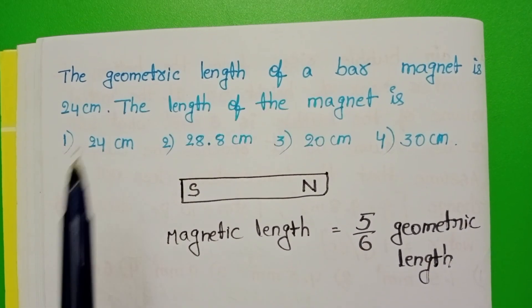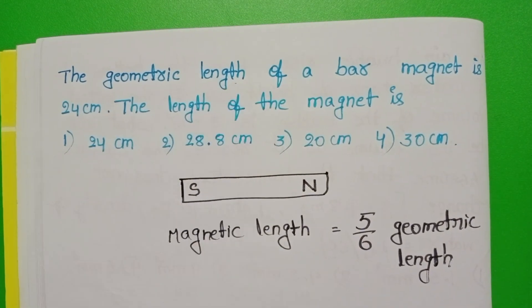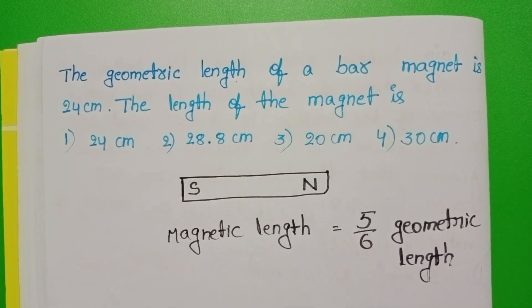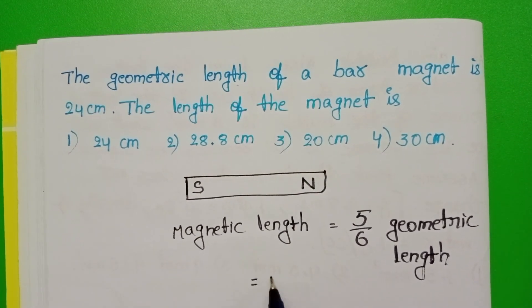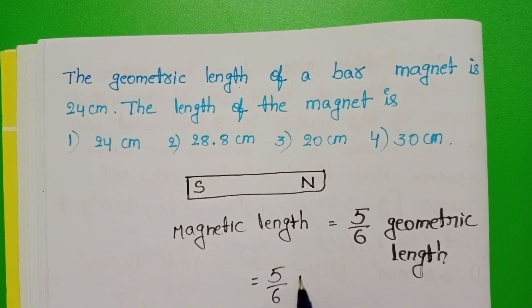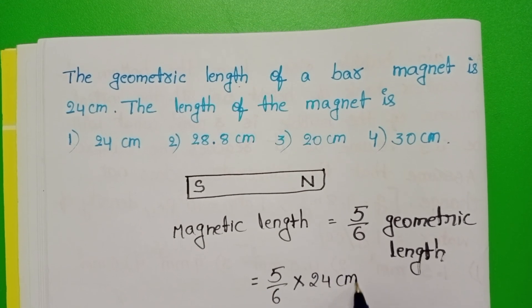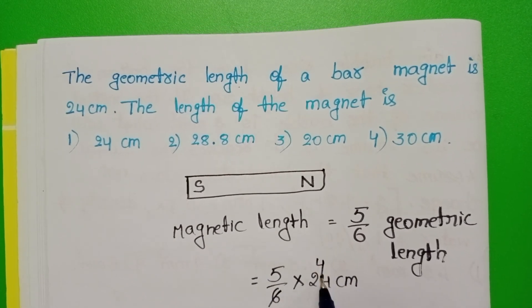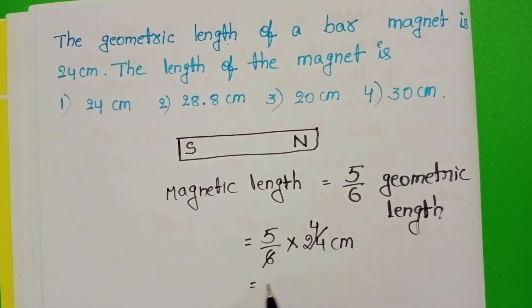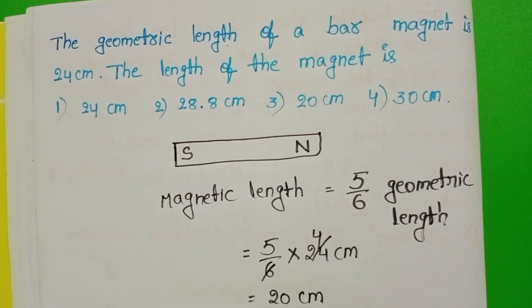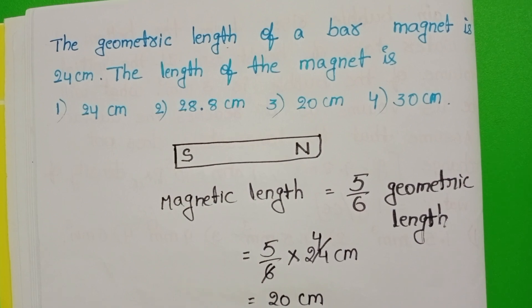In this question we know the geometric length of the bar magnet. We have to find out the length of the magnet. So length of the magnet equals 5 by 6 into 24 cm, which gives us 20. So length of the magnet is 20 cm.